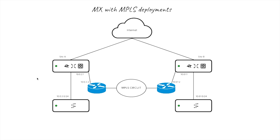Here you can see the topology we have: one MX — let's call it site A or MX1 — and then MX2 on site B. Inside those two locations we have one router each — router A and router B — connected through the MPLS, which is different from the internet breakout. On the LAN side of MX1, in the Addressing and VLAN section, we have VLAN 10 with subnet 10.0.2/24, and VLAN 100 as the point-to-point link between the MX and router A, using 10.0.2.1 and 10.0.2.2.